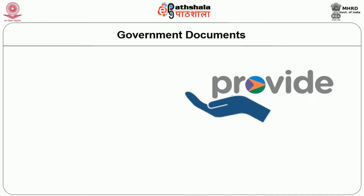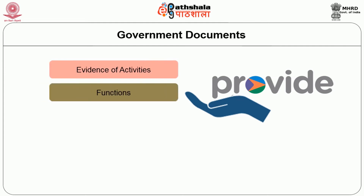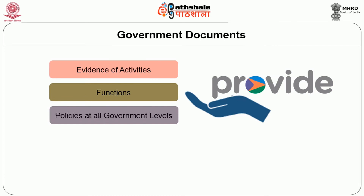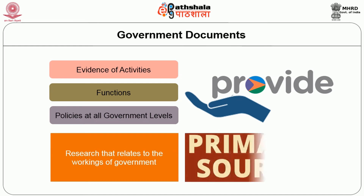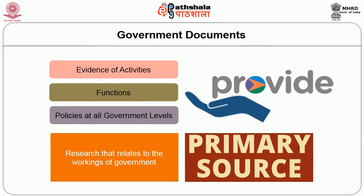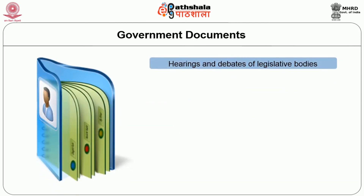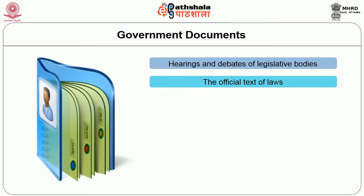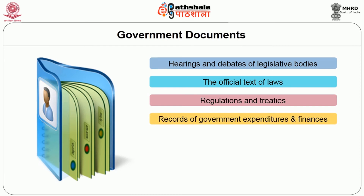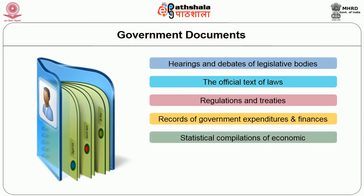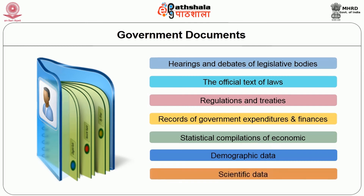Government documents provide evidence of activities, functions and policies at all government levels. For research that relates to the workings of the government, government documents are primary sources. These documents include hearings and debates of legislative bodies, the official text of laws, regulations and treaties, records of government expenditure and finances, and statistical compilations of economic, demographic and scientific data.